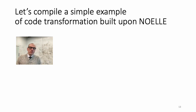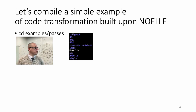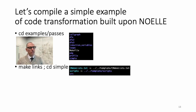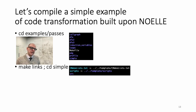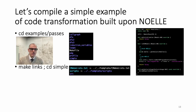Let's compile a simple example of a code transformation built using NOEL and then run it. Go inside one of the simple examples in the NOEL source tree — under examples/passes, you see a few of them. Go under that directory and run make links, which adds some links to help you compile a given pass. Then go inside the directory of the pass you're interested in testing. The one that prints how many IR instructions exist in a program is called simple.